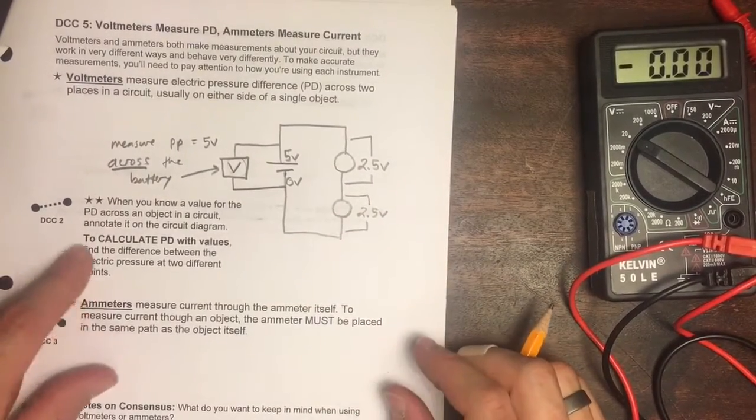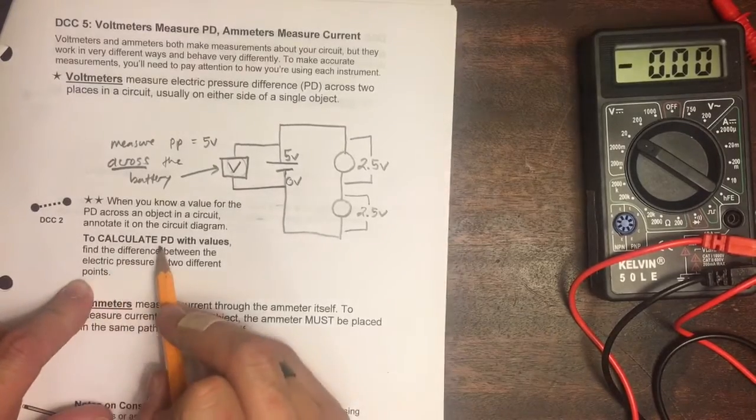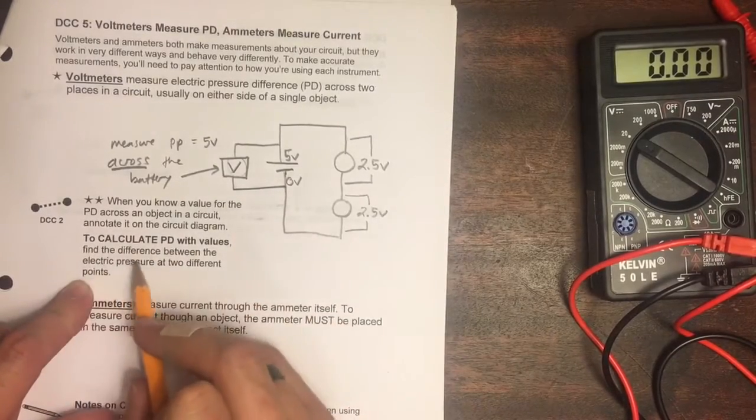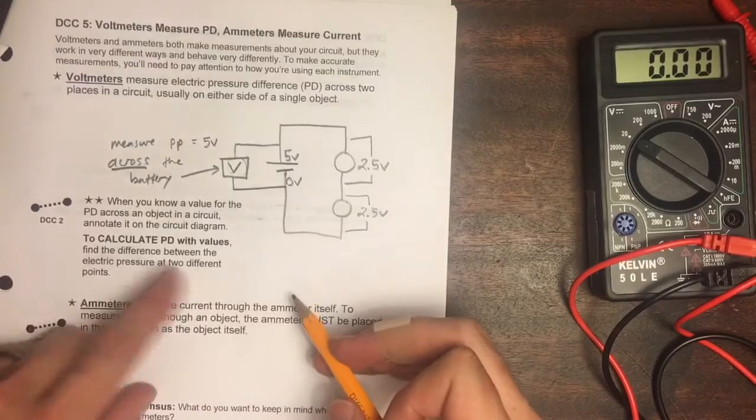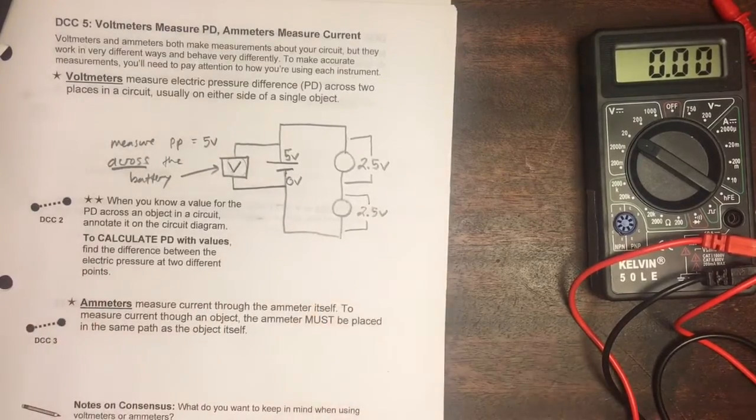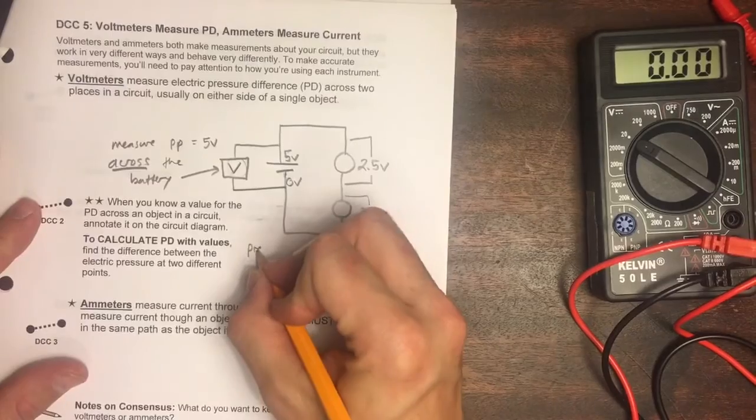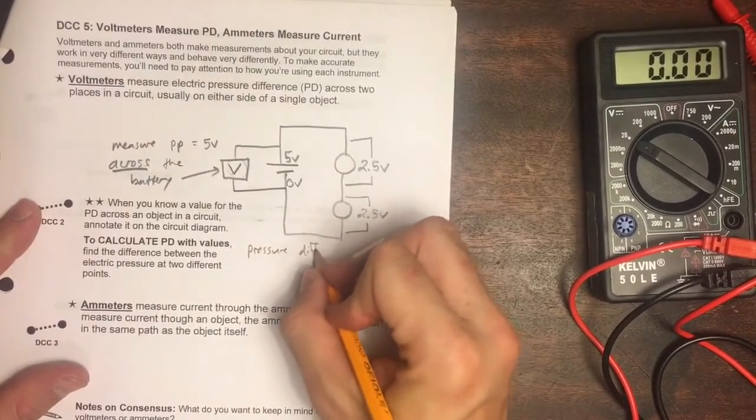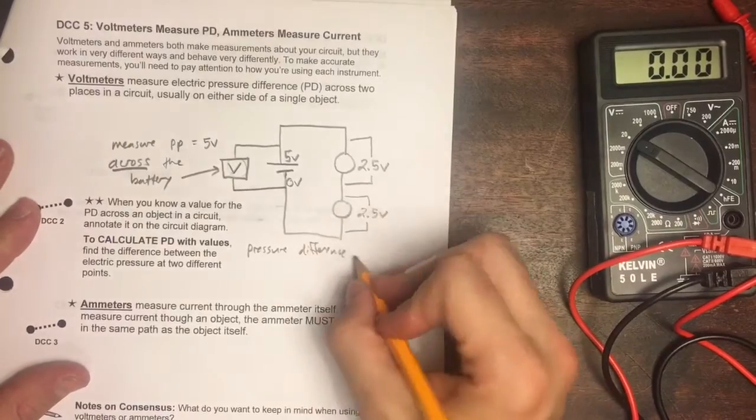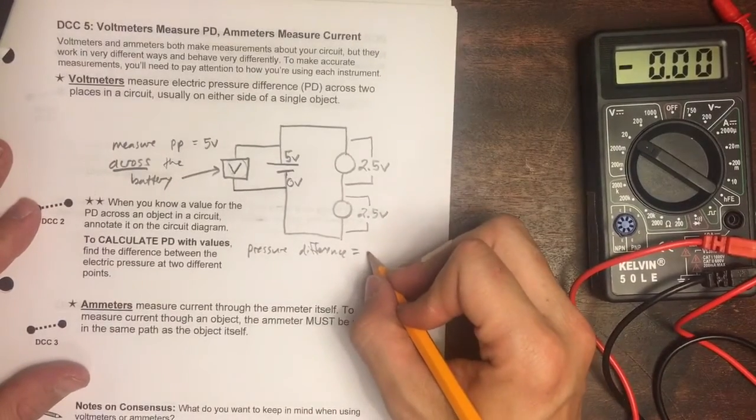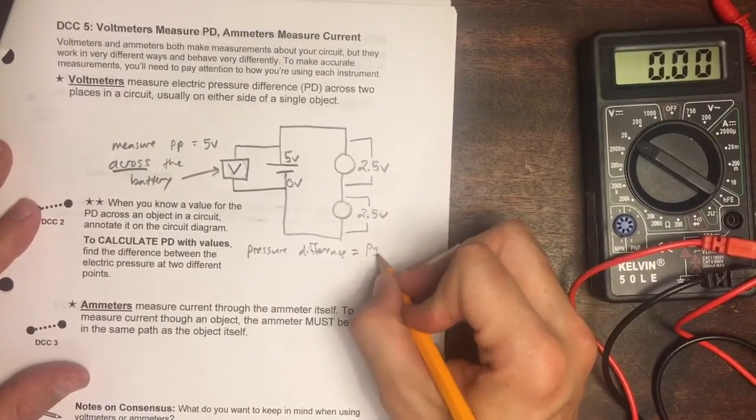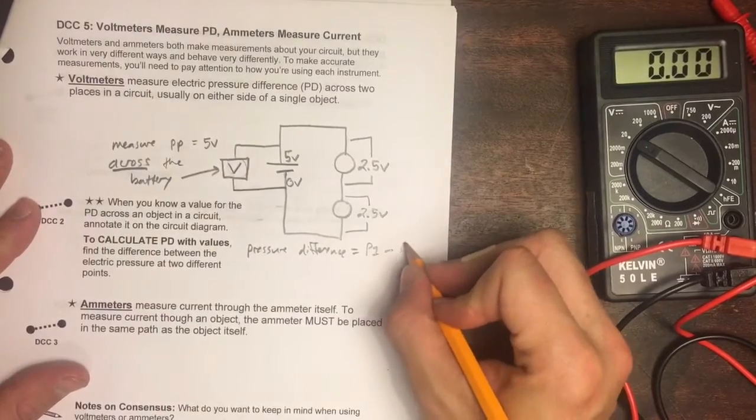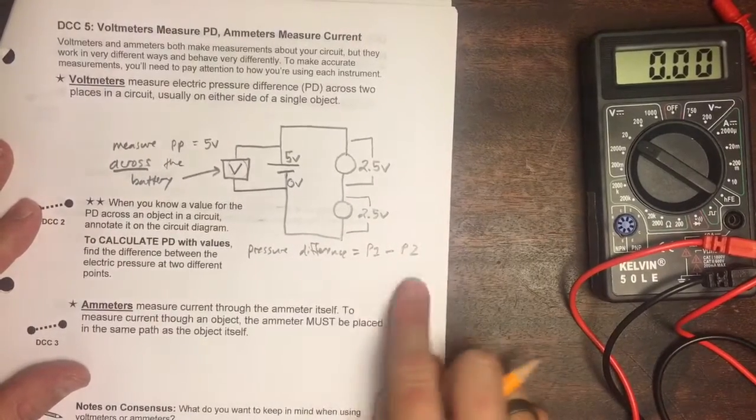One last thing, this note says to calculate pressure difference with values, find the difference between the electric pressure at two different points. This is straightforward. We're saying pressure difference equals P1 minus P2. That's what the word difference means.